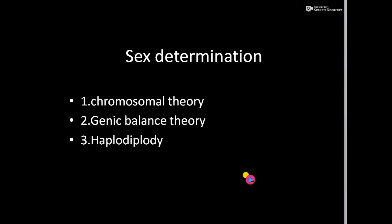Today we are going to learn about sex determination in animals. Sex determination in animals can be explained under three categories: the first one is chromosomal theory of sex determination, the second one is genic balance theory, and the third one is haplodiploidy.